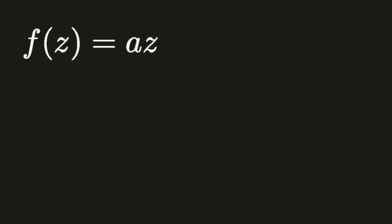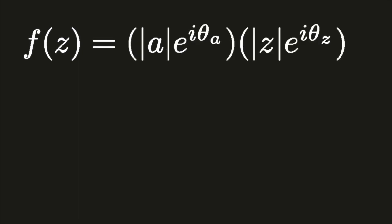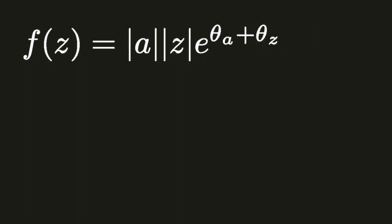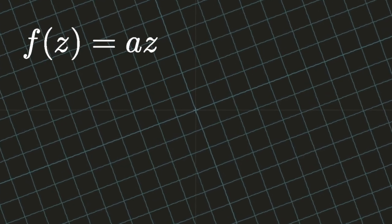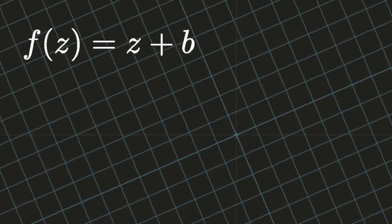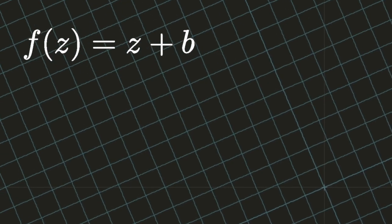Consider the function f of z equals a times z alone. Writing out a and z in polar form, we see that the absolute values are multiplied, resulting in a scaling transformation, and the angles are added, resulting in a rotation. The function f of z equals z plus b is simply a translation.